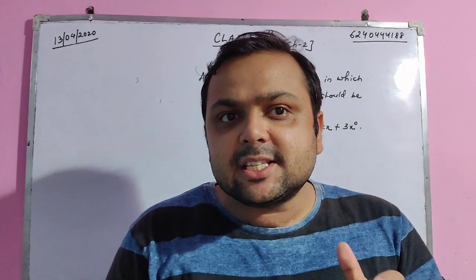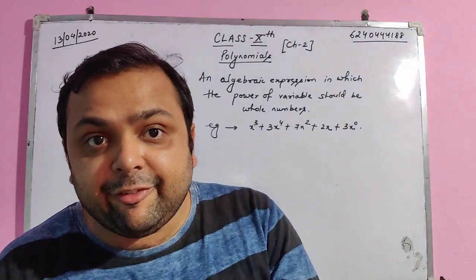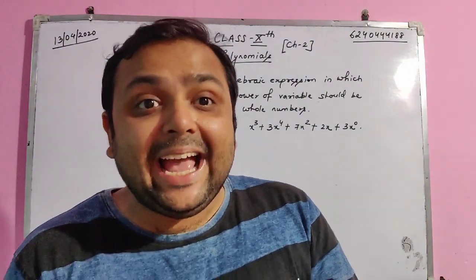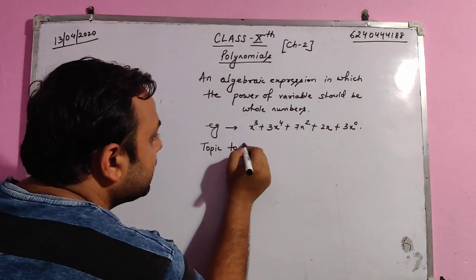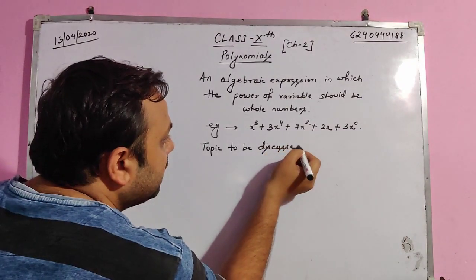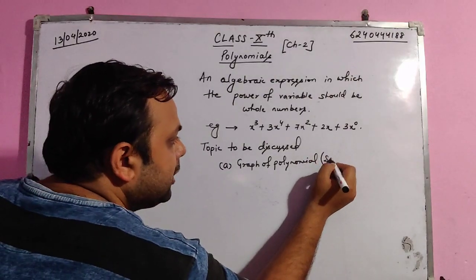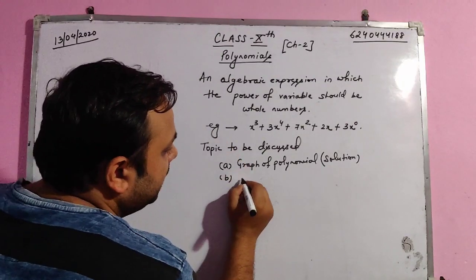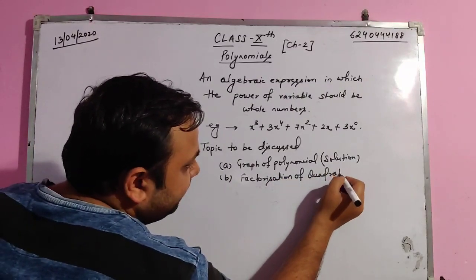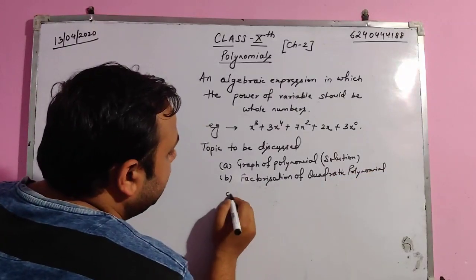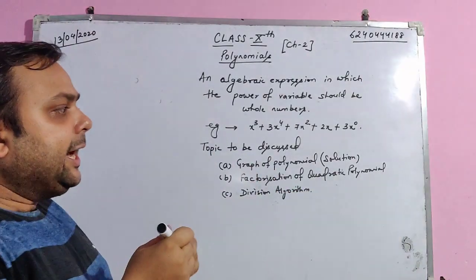In class 10, we are going to study the solution of polynomials using graphs, then the relation between the roots and the solution of biquadratic polynomials. The topics we need to discuss in this chapter are: graph of polynomial for solution, factorization of quadratic polynomial, and division algorithm.